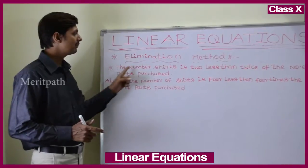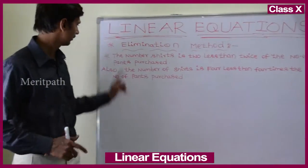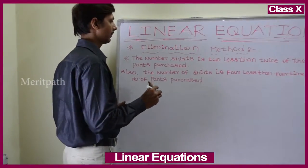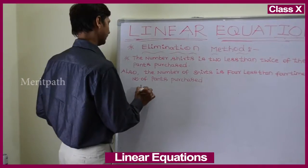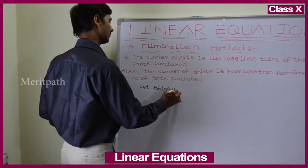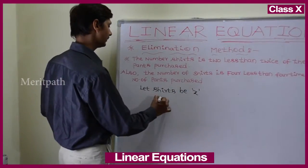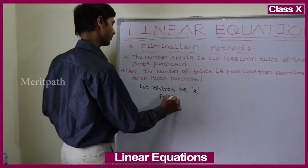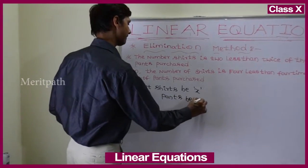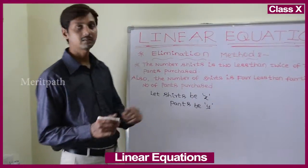It is given that the number of shirts is 2 less than twice the number of packs. Let shirts be x and packs be y.